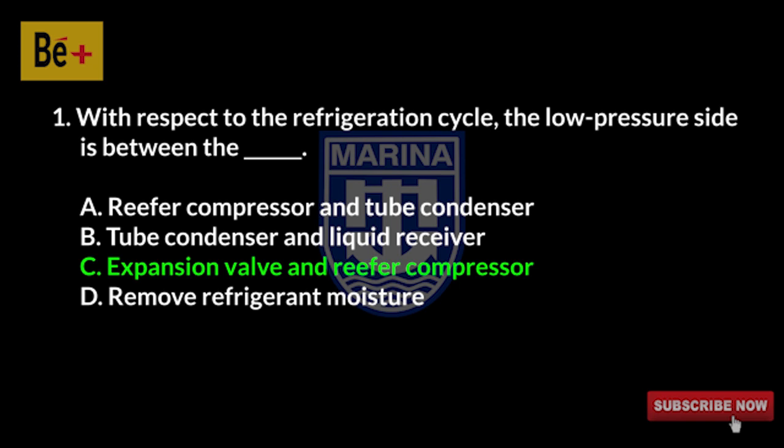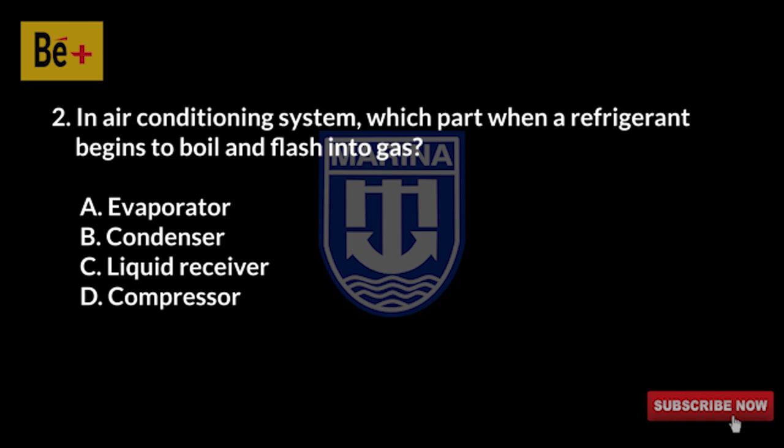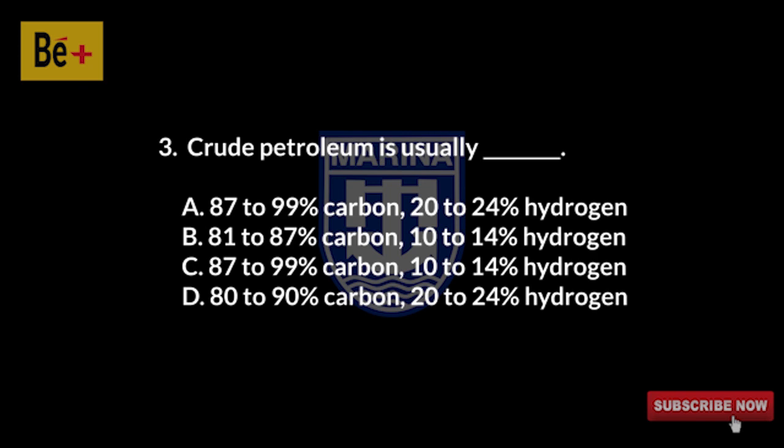In an air conditioning system, which part is where the refrigerant begins to boil and flash into gas? A) evaporator, B) condenser, C) liquid receiver, D) compressor. The answer is A, evaporator.